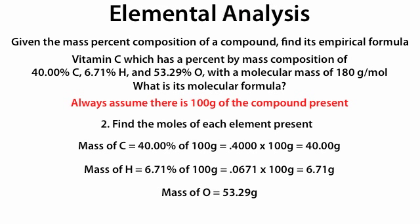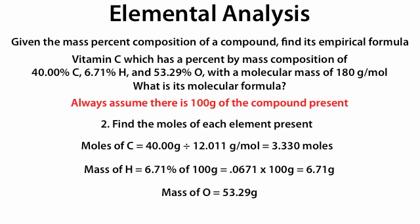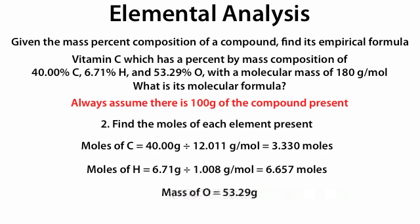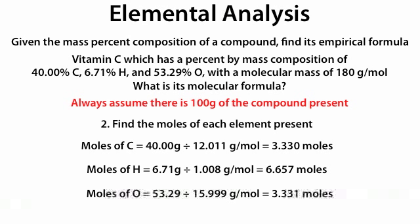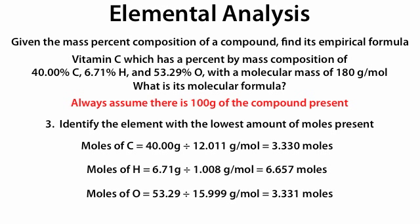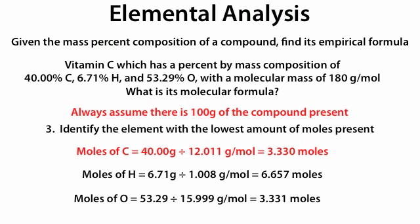Step 2: find the moles of each element present. For carbon, divide 40 grams by 12.011 g/mol to get 3.330 moles. For hydrogen, divide 6.71 grams by 1.008 g/mol to get 6.657 moles. For oxygen, divide 53.29 grams by 15.999 g/mol to get 3.331 moles. Step 3: identify the lowest amount of moles — that is 3.330 moles of carbon.